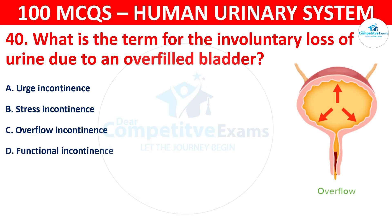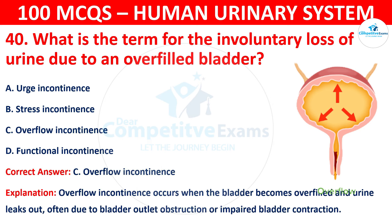The correct answer is C, that is overflow incontinence. Overflow incontinence occurs when the bladder becomes overfilled and urine leaks out, often due to bladder outlet obstruction or impaired bladder contraction.